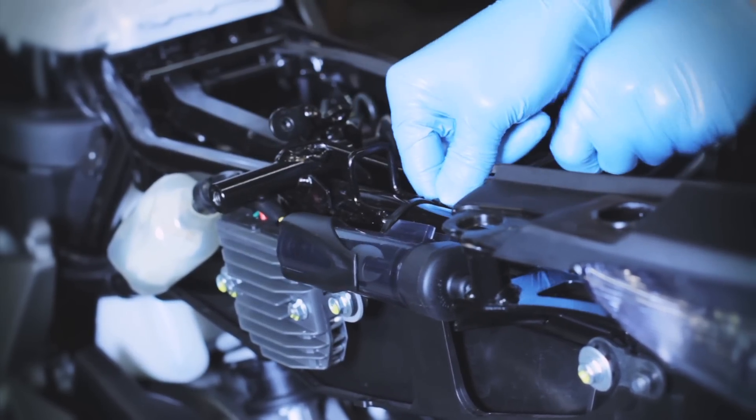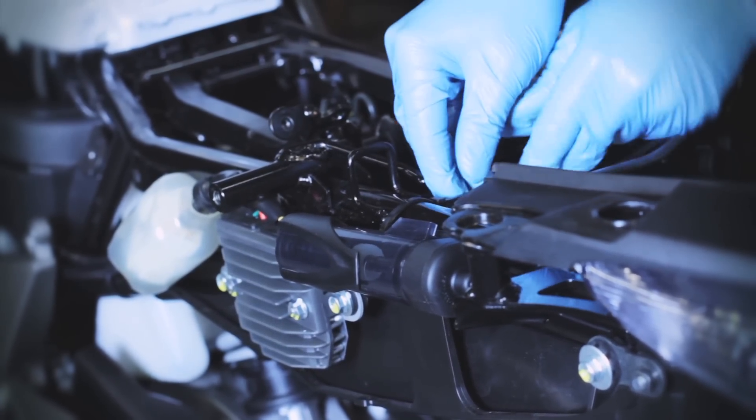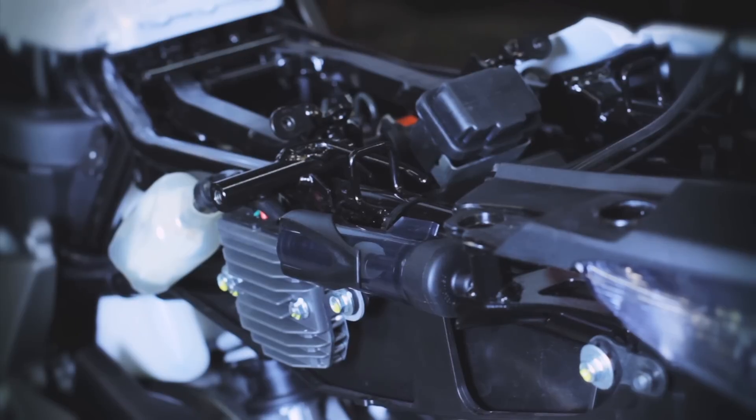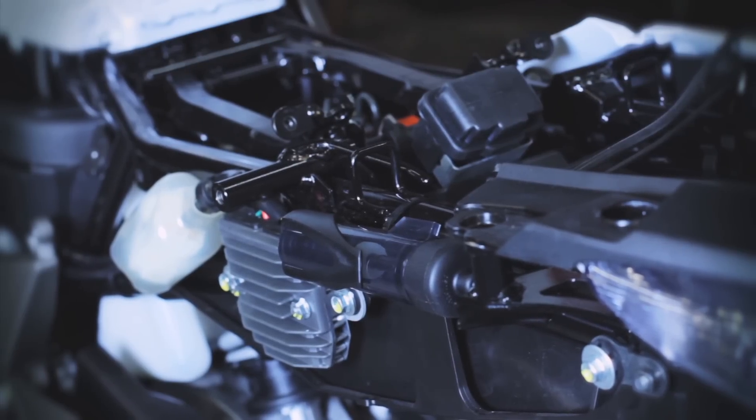Find a space where the reservoir can sit at an angle. Either screw or cable tie the reservoir cage to a flat surface or frame tube, and always have the filler plug accessible.